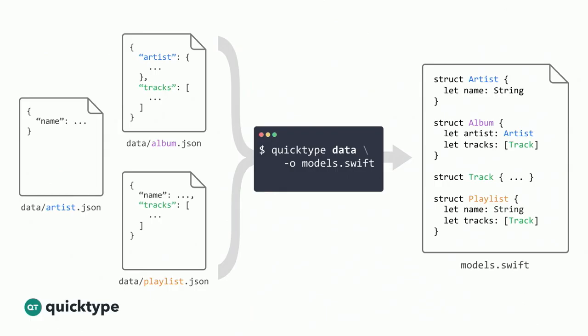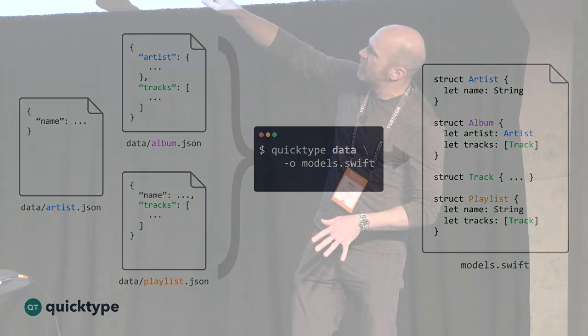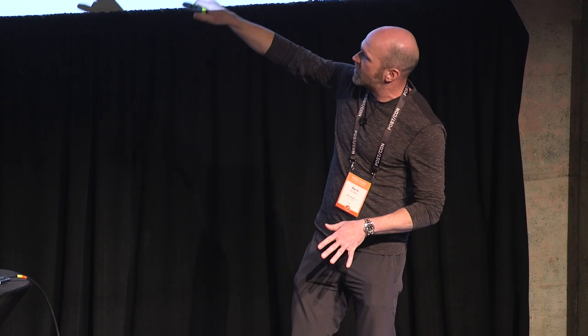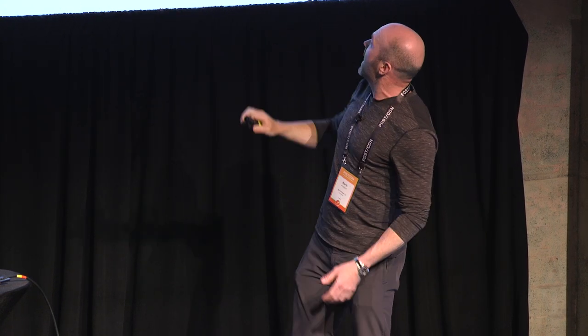Another thing that we do is consolidate and combine types across different request endpoints. In this case, you can see a Spotify-like API with artist, album, and playlist endpoints. Albums have artists and tracks, and playlists also have tracks. QuickType figures out that the artist from the album looks very much like the artist from the artist endpoint, and the tracks look the same across the playlist and the album — so you just get one type for each.